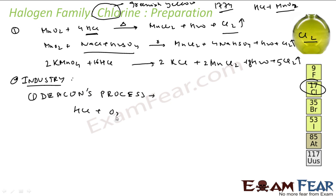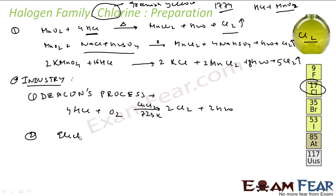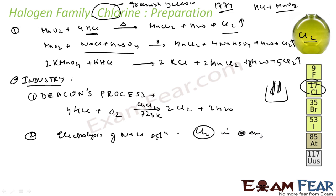In the Deacon's process, HCl gas reacts with atmospheric oxygen in the presence of CuCl2 catalyst at 723 Kelvin, yielding chlorine and water. The second industrial method is electrolysis of NaCl solution. In this, chlorine gas is liberated at the anode — that is also one way of generating chlorine industrially.